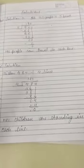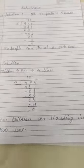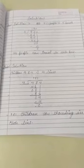So the quotient is 121, which means that 121 children are standing in each line.